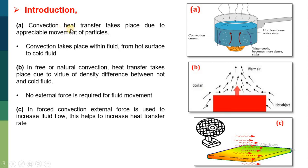Introduction. Convection heat transfer takes place due to appreciable movement of the particles. In the basic part of heat transfer, we have studied that there are three modes of heat transfer: conduction, convection, and radiation. In case of convection, heat transfer takes place due to the appreciable movement of the particles — that is, the particles of the material are transferred from one location to another.